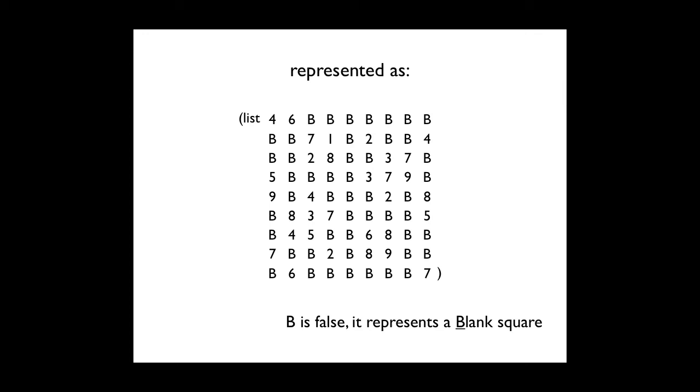We've got it in a single list 81 elements long, but it is representing the whole board. And 4 and 6 represent the numbers 4 and 6 in the board. And B is just shorthand for false. And I named the constant that holds false B for blank. So there's a board that corresponds to the board that we've been using.